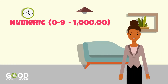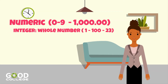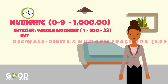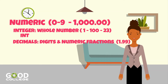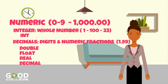Numeric data types accept only numbers and number formats. They can generally be divided into two groups: Integer, which stores only a whole number — the most commonly used is Int — and Decimals, which stores decimals, digits, and numeric fractions. The most used decimal types are Double, Float, Real, and Decimal. The difference between them is the precision and the number of digits.